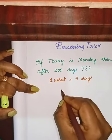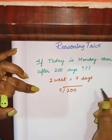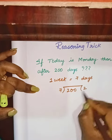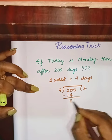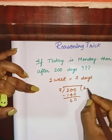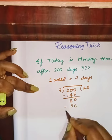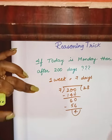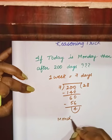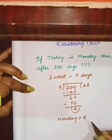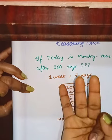So divide 200 by 7. 7 times 28 gives you 196, so the remainder would be 4. Add 4 to Monday: Monday, Tuesday, Wednesday, Thursday, Friday.